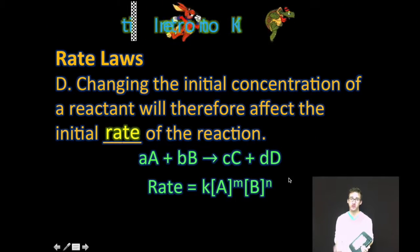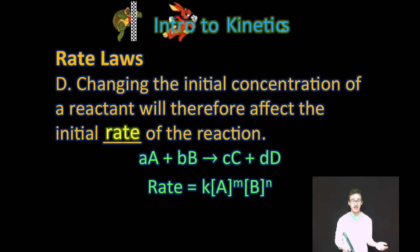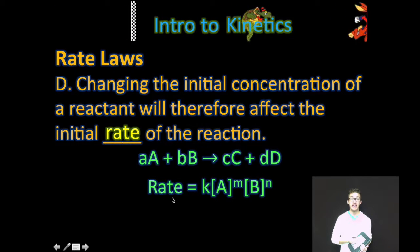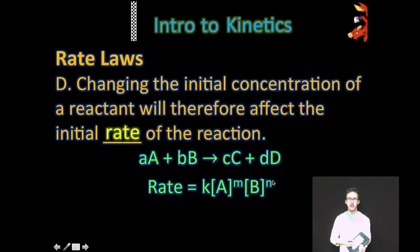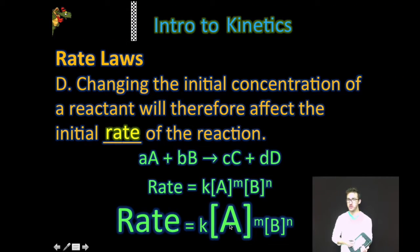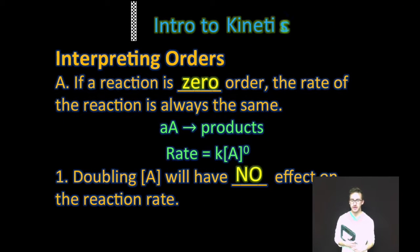Although in this example the orders are identical to the coefficients in the balanced chemical equation, that is not always the case. What the rate law tells us is how the rate — how the speed of a reaction — depends on the concentration of the reactants. Therefore, changing the initial concentrations of a reactant will affect the initial rate of the reaction.